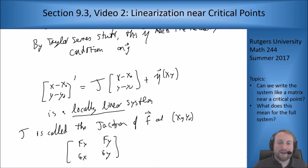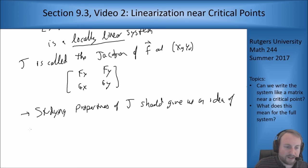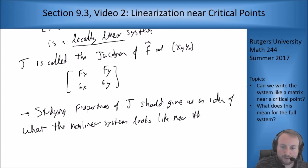Now this gets us to a constant coefficient matrix that we can use to analyze our system. The ideas before told us that studying properties of J should give us an idea of what the nonlinear system looks like near that point, near the critical points, and we can try to fill things in from there.